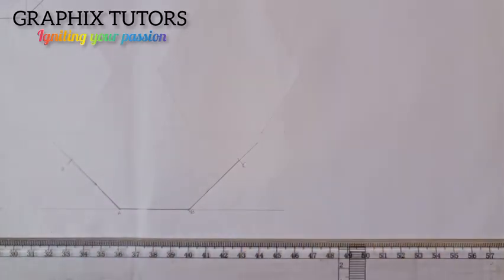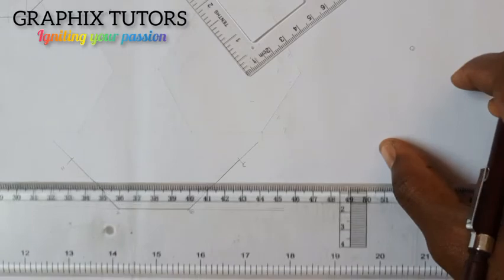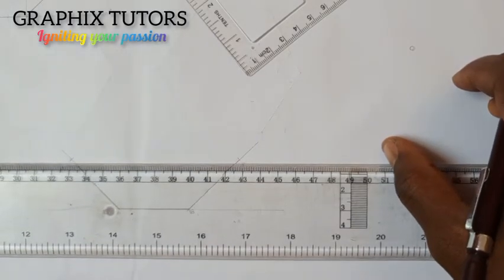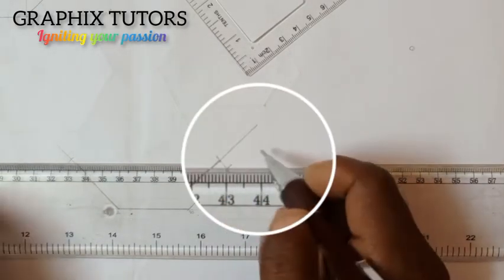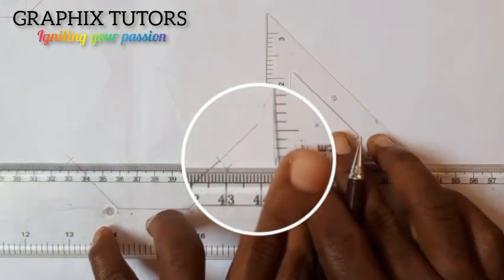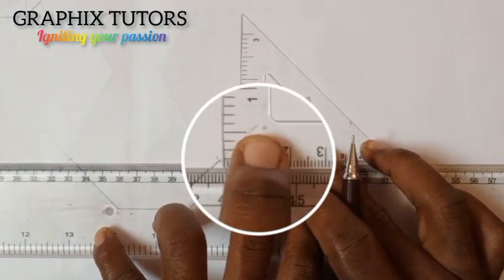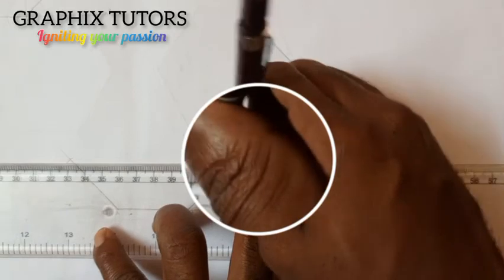Now what I'll do again is I'll still move my t-square up to this point where there is an intercept of point C. I'll stand it this way at 90 degrees, move it to this point, then I'll draw my vertical line.